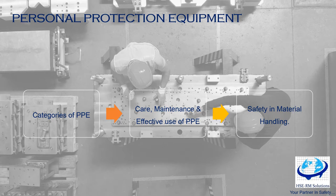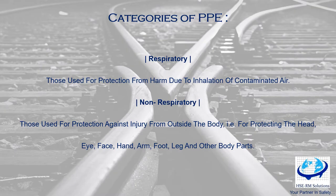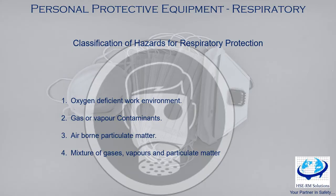We were primarily focusing on two categories: respiratory and non-respiratory PPE. Those used for protection from harm due to inhalation of contaminated air are respiratory. We classified the hazards of respiratory protection: oxygen-deficit environment, gas and vapor contamination, airborne particulate matter, and mixed gas, vapor, and particulate matter.